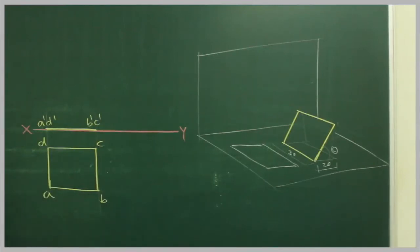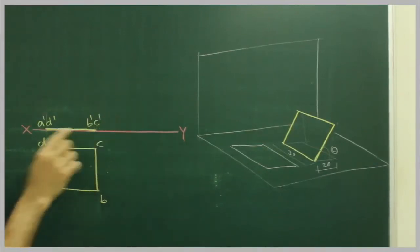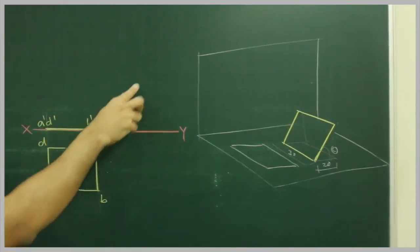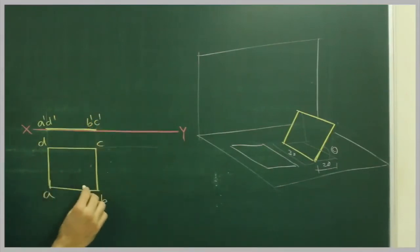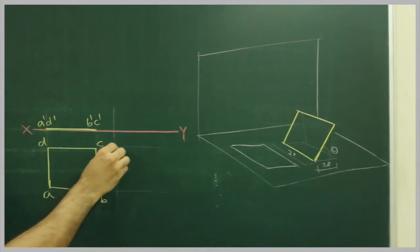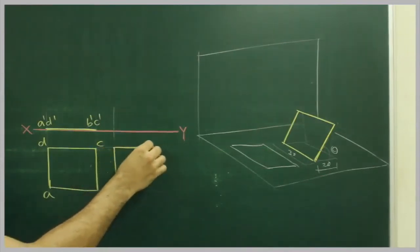Now we need to draw a rectangle of side 30 by 20. Instead of doing it, and we don't know the angle also, so we will first draw top view. We will take 30 and we will take 20.